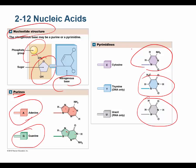The other nitrogenous bases — cytosine, thymine, and uracil — are pyrimidines, meaning single ring structures, not double ring structures. Cytosine is found in both RNA and DNA. Thymine is only found in DNA; you don't find thymine in RNA. And lastly, uracil is only found in RNA — it's a pyrimidine that's not found in DNA.